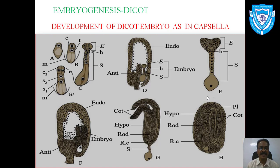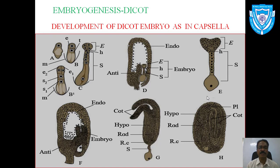Further divisions — all mitotic — give rise to a horse-shoe shape structure. At the same time, the lower portion, the suspensor facing toward the micropylar end, helps push the embryo into the endosperm so that maximum nourishment can be obtained. In this way, the development of the embryo completes.